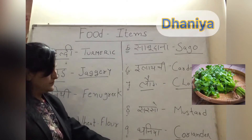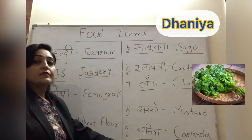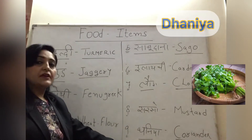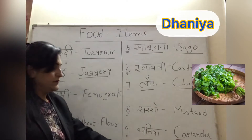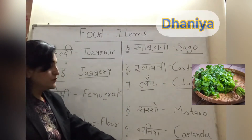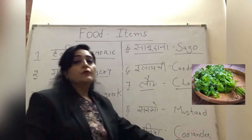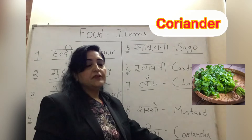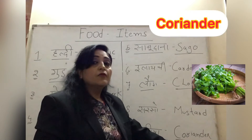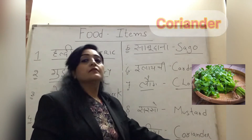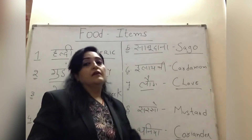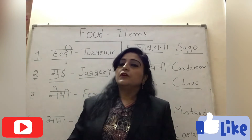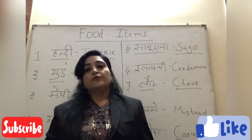Last but not the least — Dhaniya. Dhaniya — you can order it or use normal Dhaniya. Dhaniya in English — Coriander. What do we say? Coriander.